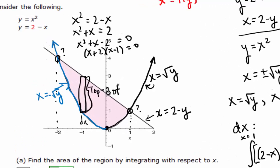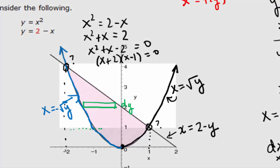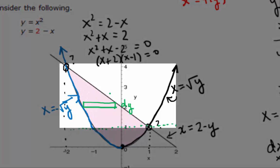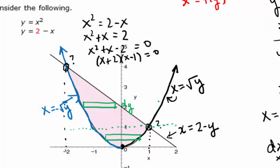Now let's do the dy version. When we integrate with respect to y, we want a horizontal representative rectangle — base times height. The base is our dy, our change in y. The height is going to be right minus left. Notice there is a point in this region where, above that dotted line, the right function is the line and the left function is the parabola. But below that line it's a different story: the right function is the positive side of the parabola and the left function is the negative side. So we're actually going to have to set up two separate integrals.